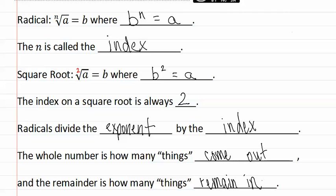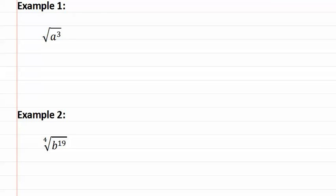Let's look at this in an example. Here's example one: we have the square root of a to the third. To simplify this, we first must know what the index is. Remember, when the index is not written, there's an implied two. Then, to figure out how many a's come out and how many a's stay in, we divide the exponent by the index. So we do three divided by two.